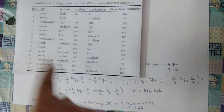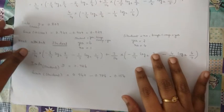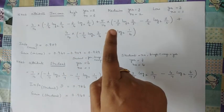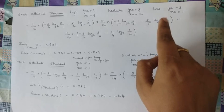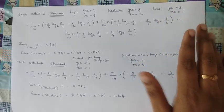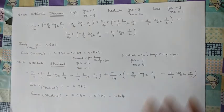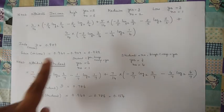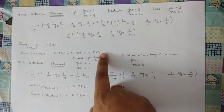Moving on to the second attribute — income — which also has three categories: high, medium, and low. For high: 2 buy, 2 do not. For medium: 3 buy, 2 do not. For low: 3 buy, 1 does not. Substituting the values in the same way gives Info_income(D), and then Gain(income) = Info(D) − Info_income(D) = 0.029.